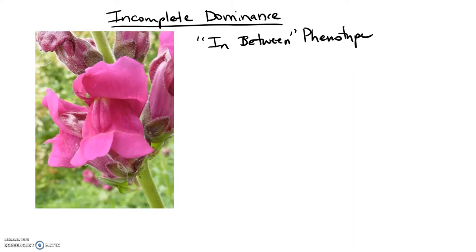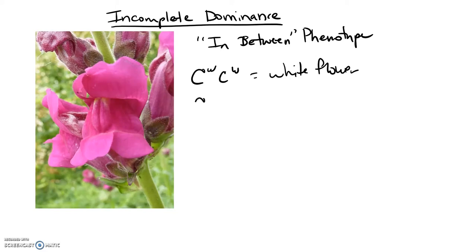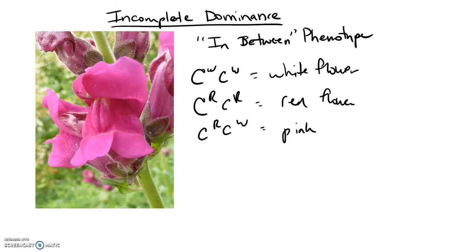We can still predict the outcome of particular crosses if we know that they have incomplete dominance. We represent the genetics as: CWCW for a white flowering plant, CRCR for a red flowering plant. Therefore when you have one of each — CRCW or CWCR — that gives us a phenotypically pink flower.